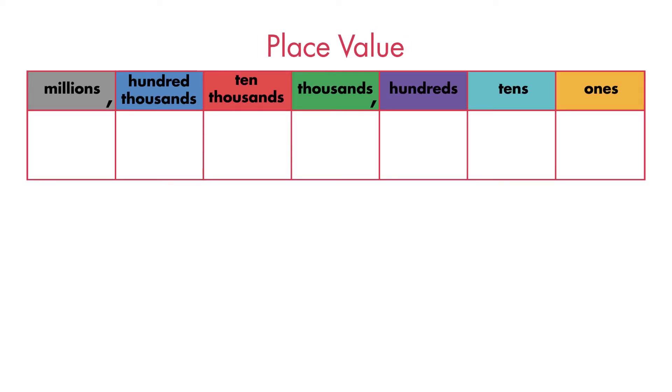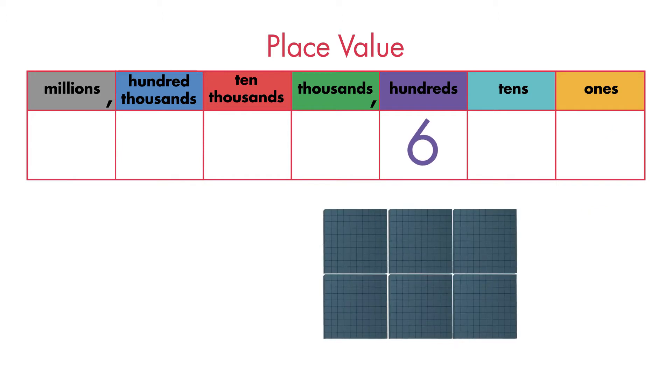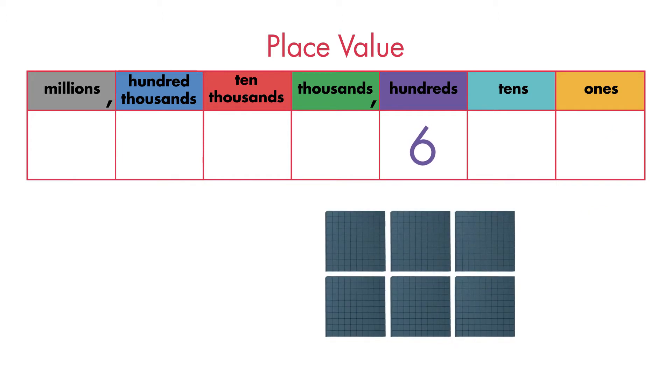When we write a number, the place of each digit tells its value. A six in the ones place has a different value than a six in the hundreds place. Expanded form helps us understand place value.